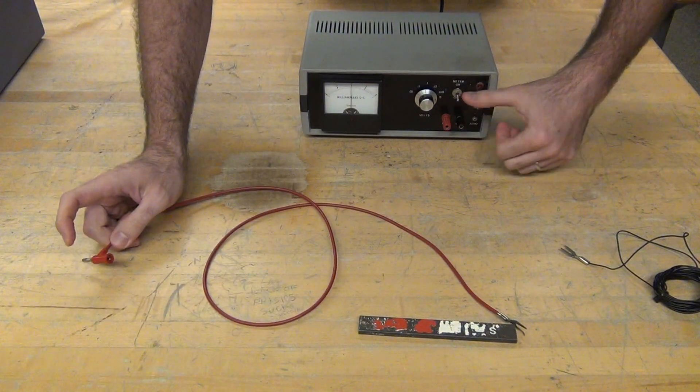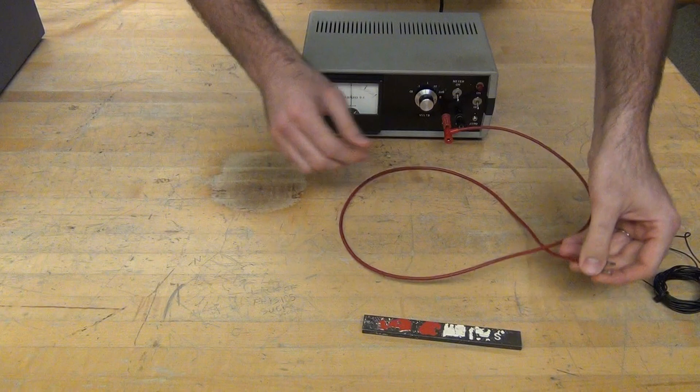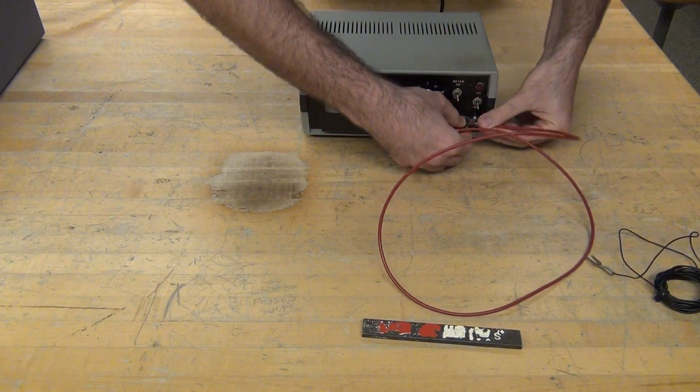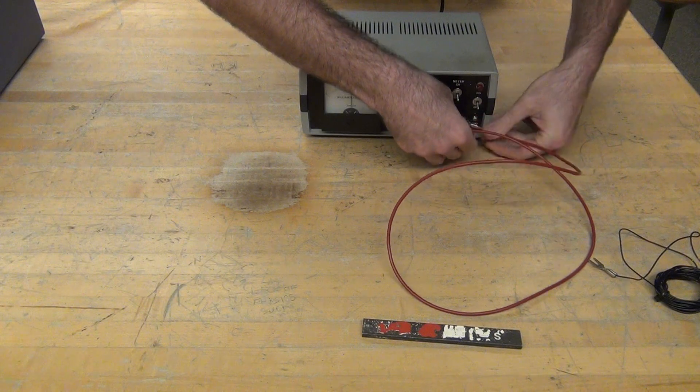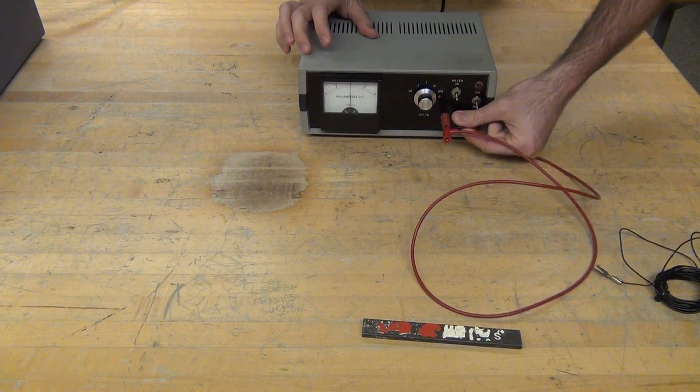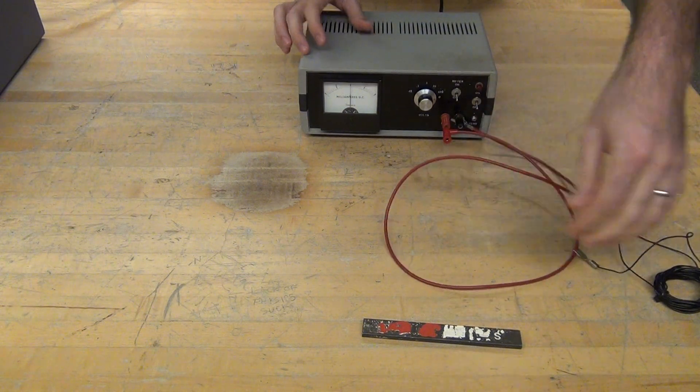So, this is off. I'm going to plug in my wire. It's banana on one end, spade on the other. So to connect the spade, I loosen that screw, slide it in, and then tighten down. I now have a loop of wire.